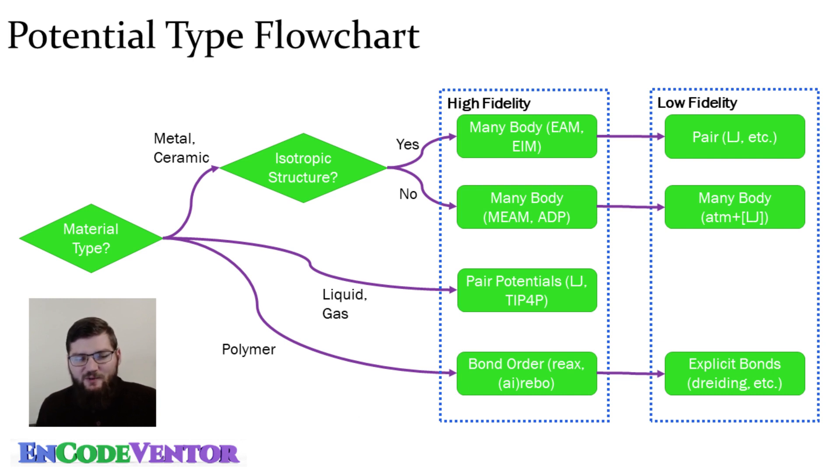If you're looking for something quicker than for an isotropic structure, you can typically get away with a pair potential, something like Leonard Jones or there's a bunch of pair potentials out there.